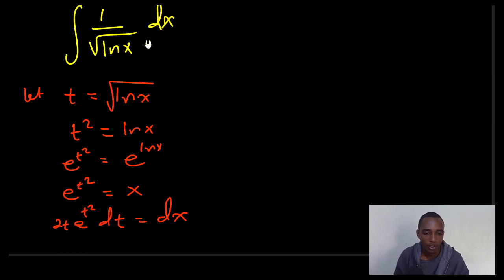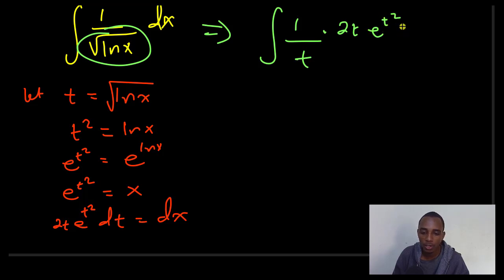Let's go ahead and put everything together now. I have the integral of 1 over, instead of the root of ln x, I'm just going to have a t there. And instead of dx, I'll have 2t times the exponent of t squared dt. You can see that this t cancels with this t.